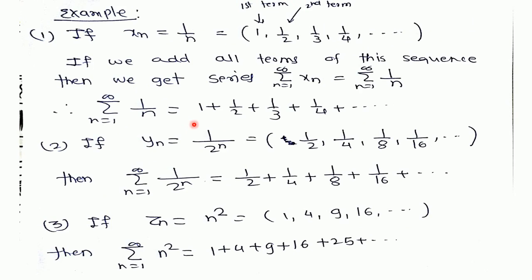For example, if we have the sequence xn equal to 1/n, then we can generate the terms by substituting values of n. Putting n=1 gives 1 (first term), n=2 gives 1/2 (second term), n=3 gives 1/3 (third term), and so on. If we add all these terms — 1 plus 1/2 plus 1/3, and so on — we get the series of 1/n.